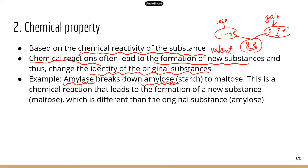Amylase breaks down amylose, a type of starch, to a disaccharide. 'Di' means two, so maltose has two single sugar units connected — those single sugar units are called monosaccharides. Monosaccharides are the building blocks of carbohydrates, so two monosaccharides join together to form a disaccharide. In this case, amylose will be broken down to maltose. Because of this chemical reaction, a new substance forms from the original substance. The original substance is amylose, but after the chemical reaction, you won't find amylose anymore — instead, you'll find the new substance, which is maltose, resulting from the chemical reaction.